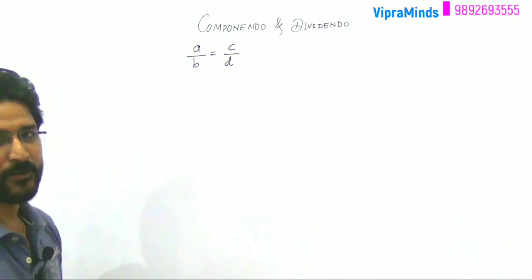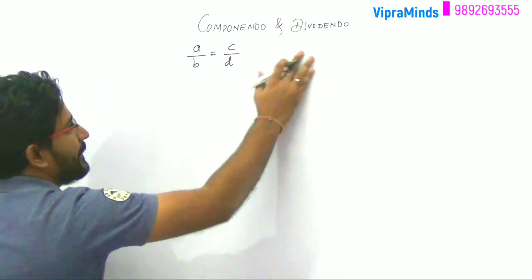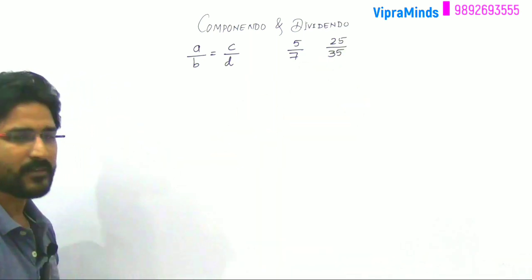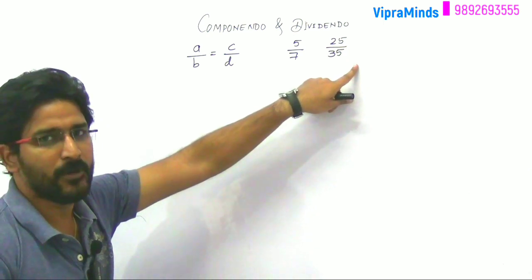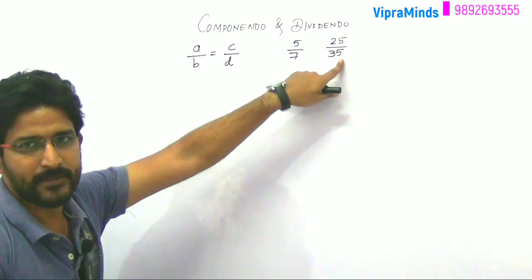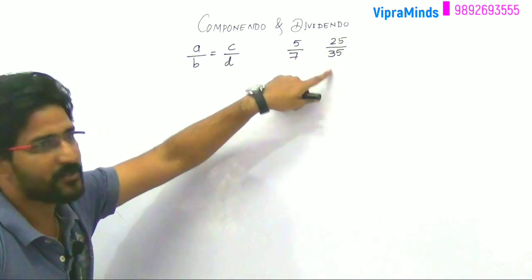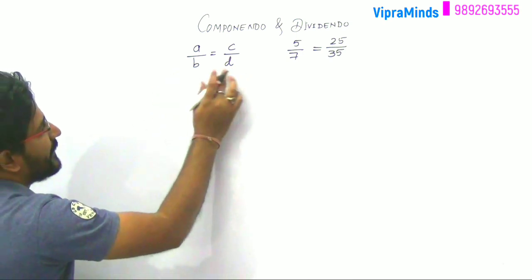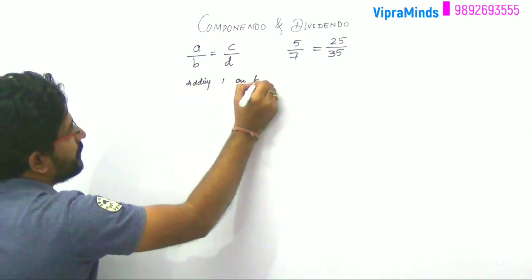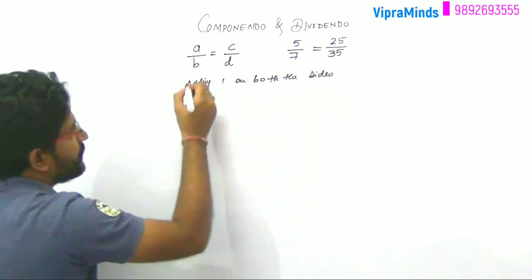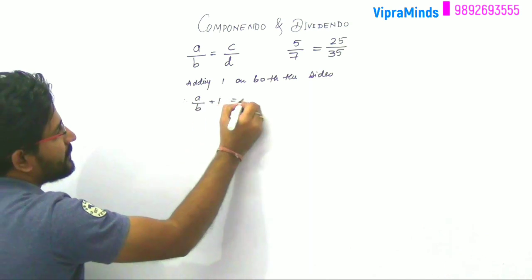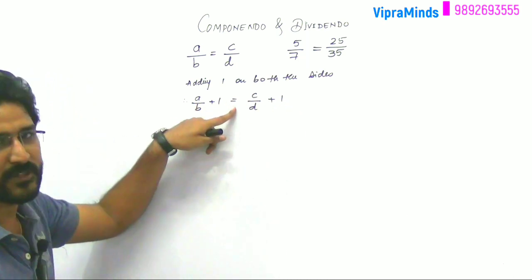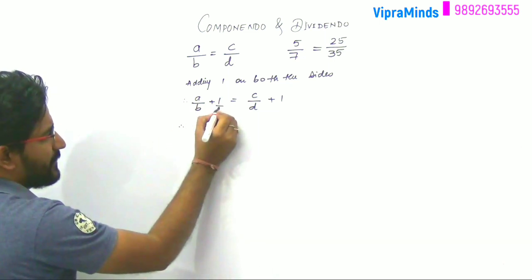When ratios are equal, we can do that. Now I have an example: 5 by 7 and the other 25 by 35. Now these two ratios are equal. If I simplify and write it in the form, then what will happen? 5 into 5 is 25, 5 into 7 is 35. So you will get 5 by 7.